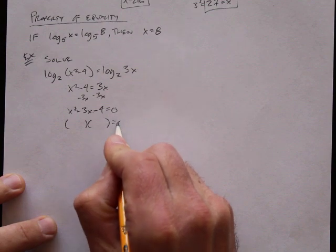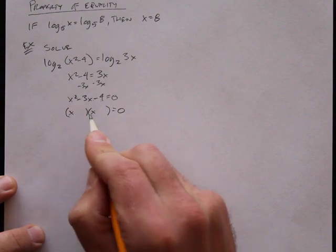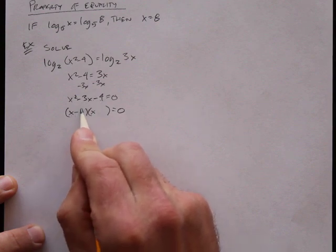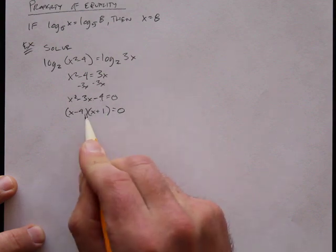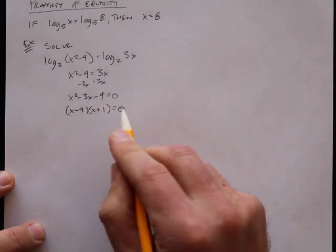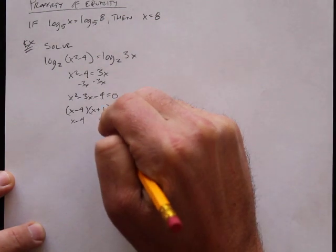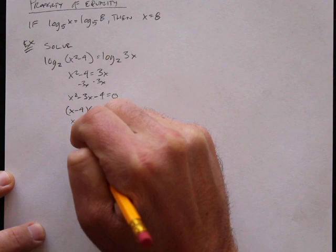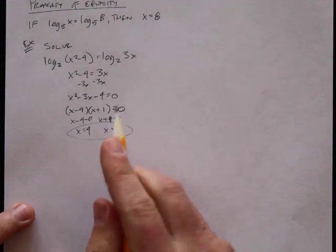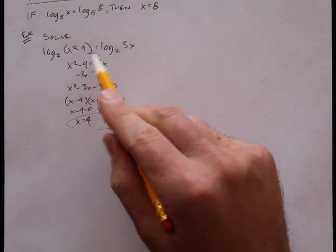What do I multiply together to get negative 4 and add together to get negative 3? Negative 4 times positive 1 gives me negative 4, and if I add those I get negative 3. So I set each factor equal to 0: x plus 1 equals 0, giving x equals negative 1, and x minus 4 equals 0, giving x equals 4. Now I have these two solutions.